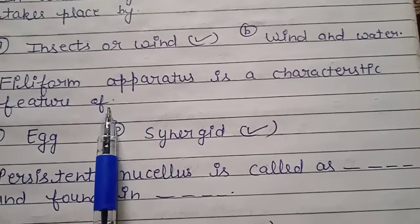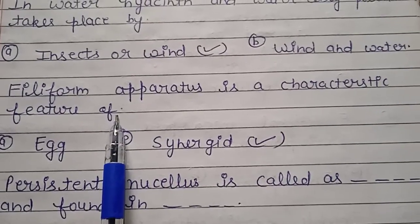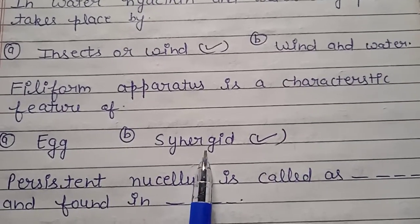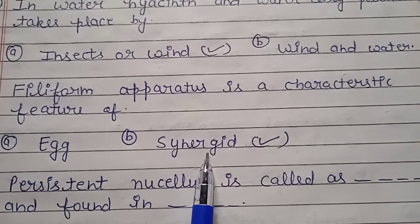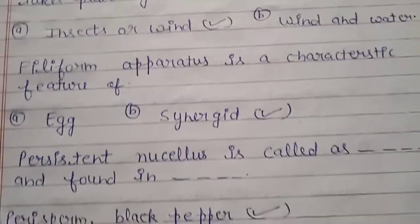Question number 2: filiform apparatus is a characteristic feature of which structure? The answer is synergids. So the right answer is synergid.